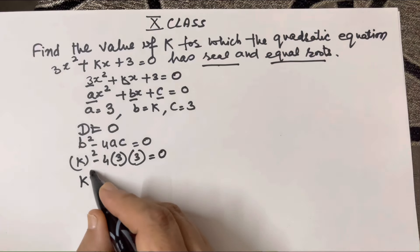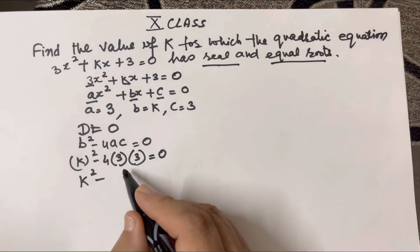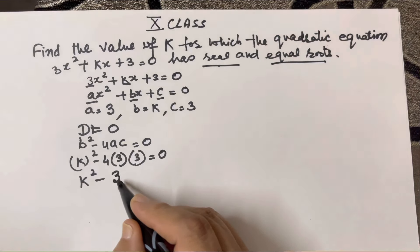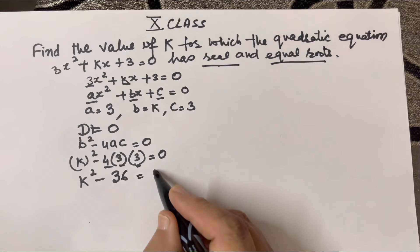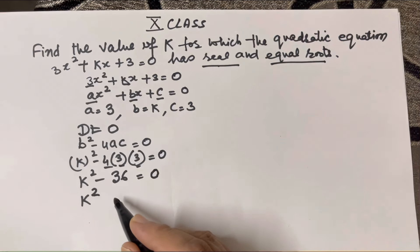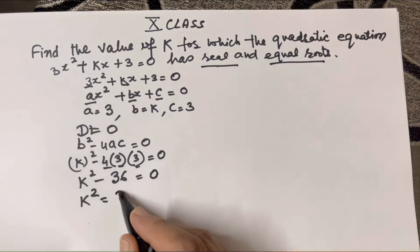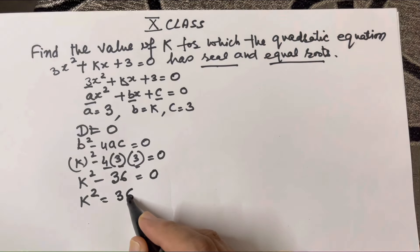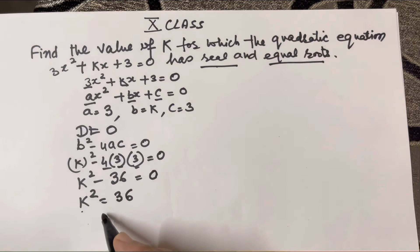So k² minus 36 equals 0. We multiply 4 times 3 times 3, which equals 36. So we can say k² equals 36.